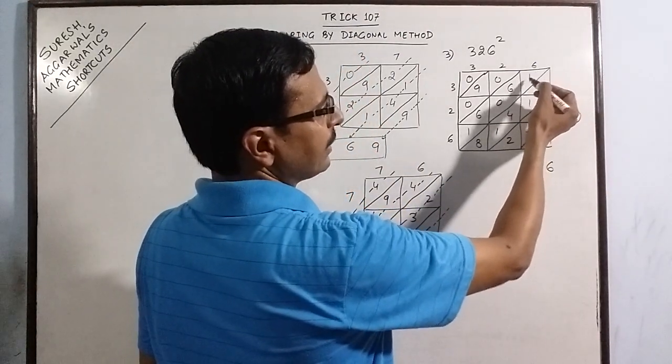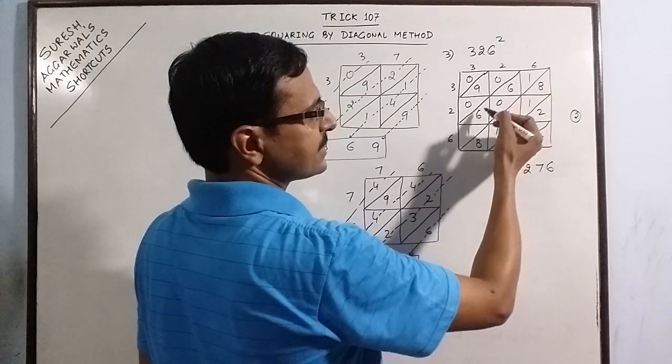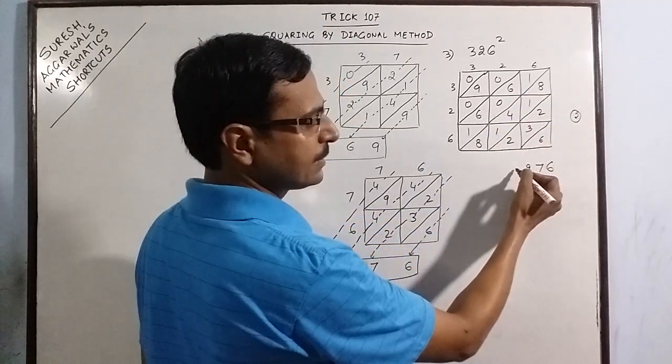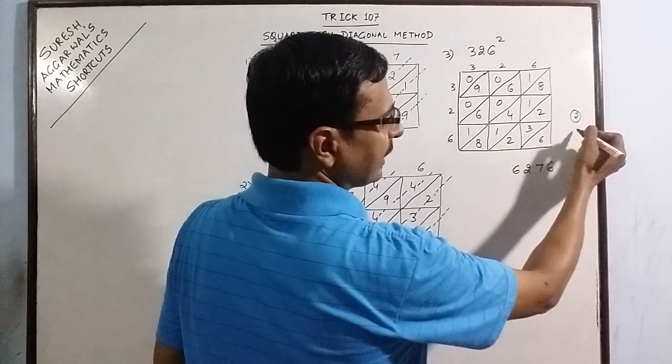4 diagonal 1 plus 6, 7 plus 6, 13 plus 1, 14. And 2 carry 16. So 1 carry now.